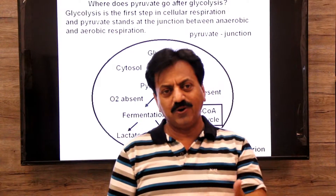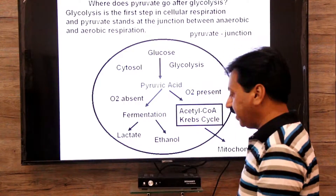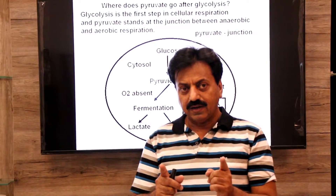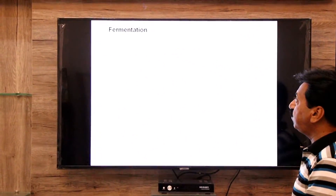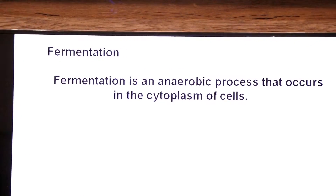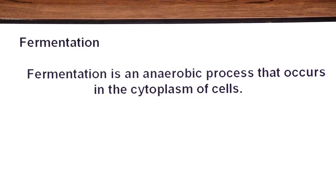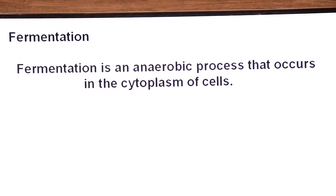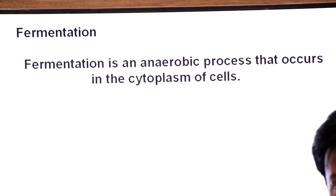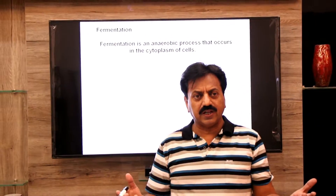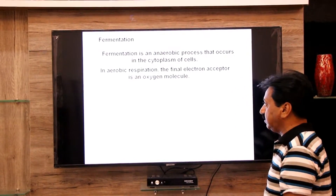There are two types of fermentation: alcoholic fermentation and lactic acid fermentation. Fermentation is an anaerobic process that occurs in the cytoplasm of the cell. When oxygen is not available, pyruvate molecules go into the fermentation process.